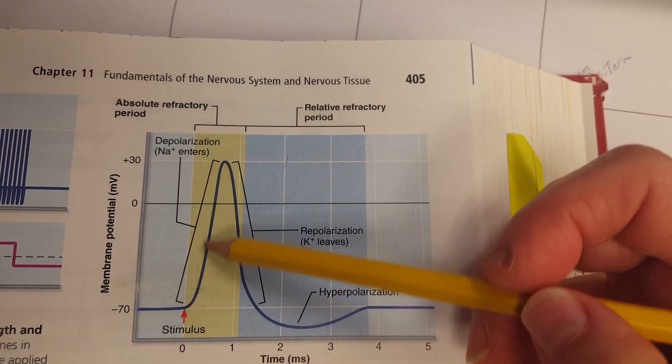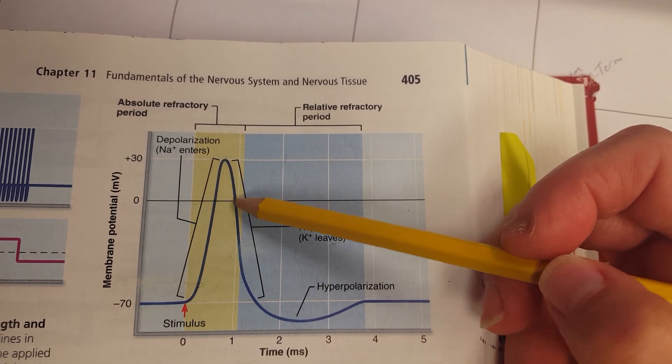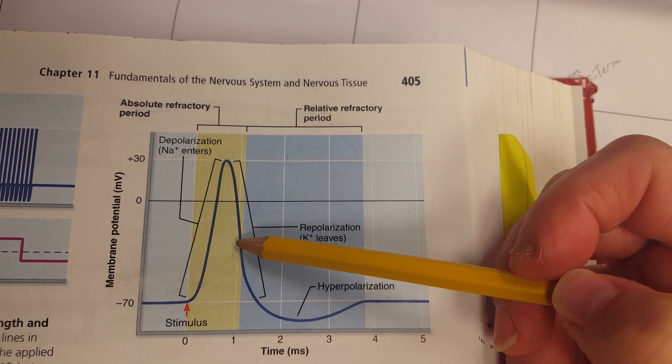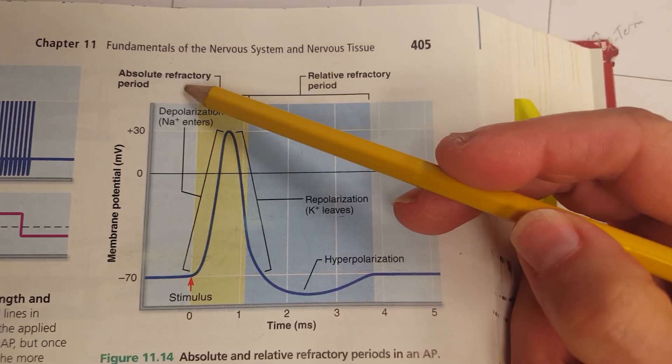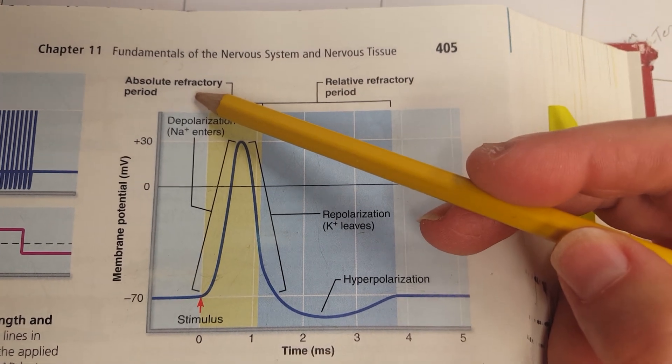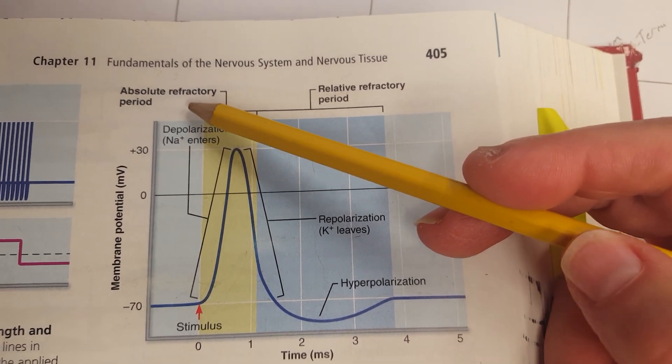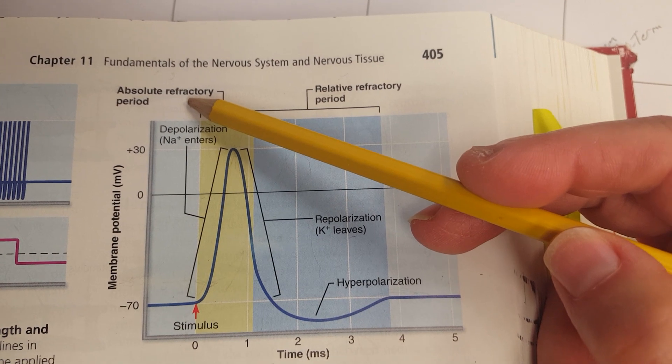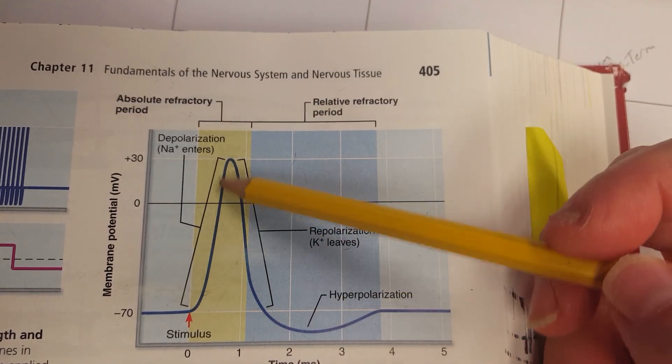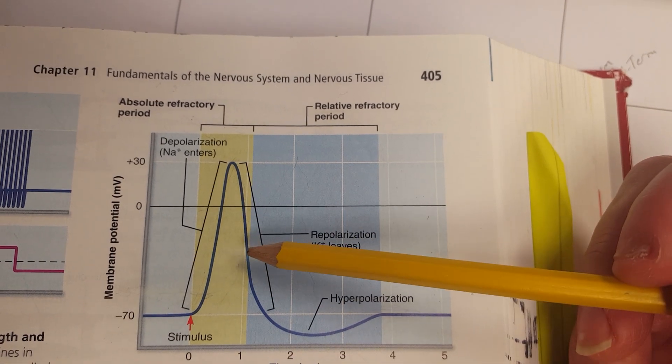So during this time of depolarization and about midway during repolarization, there is no way, absolutely no way, that we can get another action potential to occur, despite the strength of the stimulus. And that is why we refer to this as the absolute refractory period. No way are you going to be able to elicit another action potential during this time.